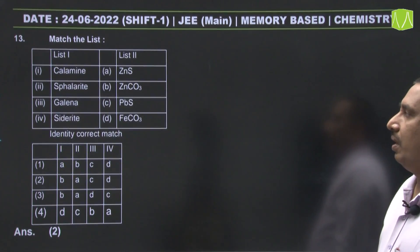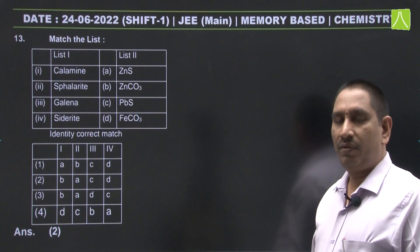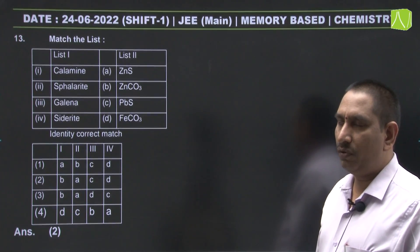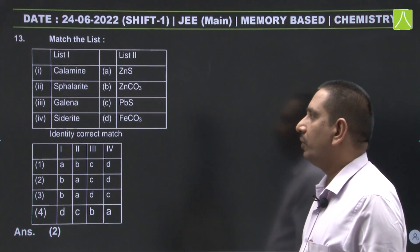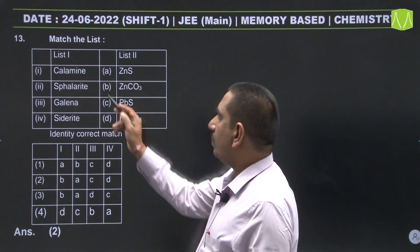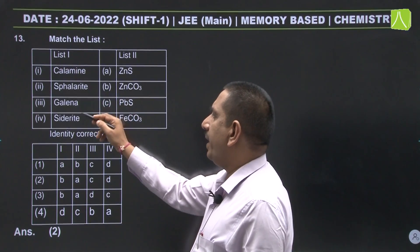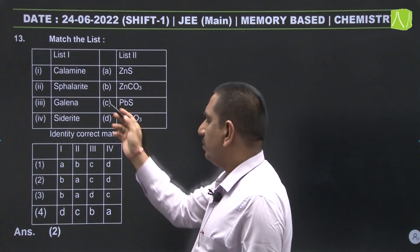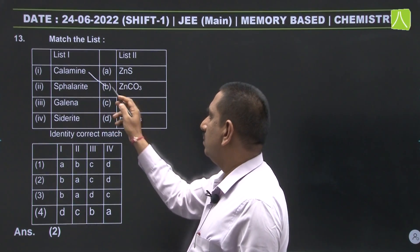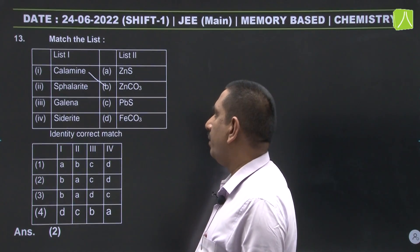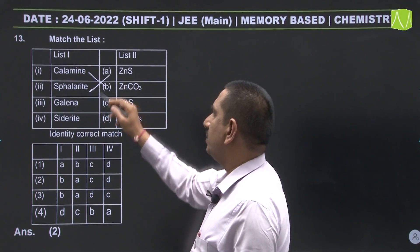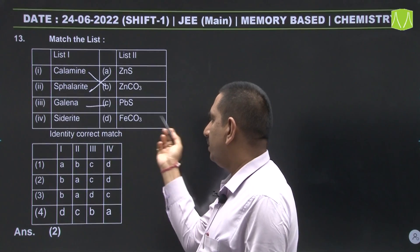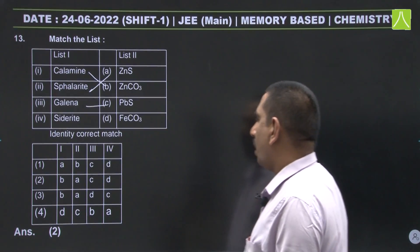A frequently asked question on ores and formulae: calamine, sphalerite, galena, and siderite are given to match. Calamine is zinc carbonate, sphalerite is zinc sulfide, galena is lead sulfide, and siderite is iron carbonate.